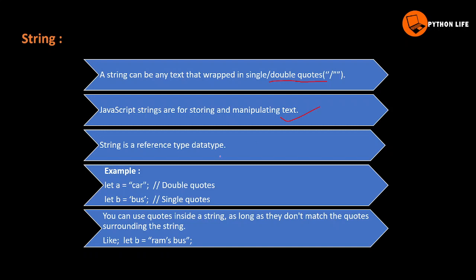The string is the reference data type. So it is a reference. If you have a value stored, you have a reference address stored. It changes the values and changes the action performance.